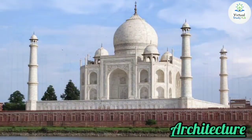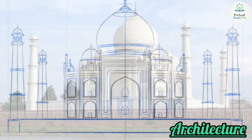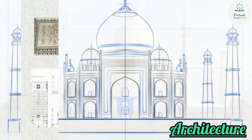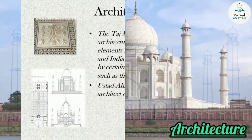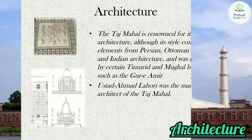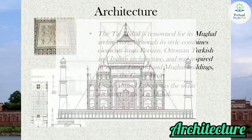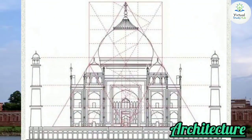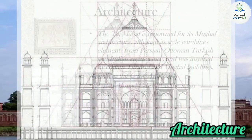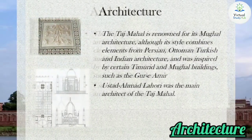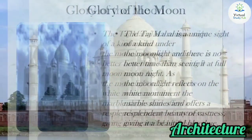This portrait is actually a piece of art done on a ceramic plate. Let us get to know a bit about its architecture. The Taj Mahal is made out of marble and many special materials. It is renowned for its Mughal architecture, although its style combines elements from Persian, Ottoman Turkish, and Indian architecture. It was inspired by certain Timurid and Mughal buildings. Ustad Ahmed Lahuri was the main architect of the Taj Mahal. As mentioned, the artisans reportedly had their hands cut off after completing this spectacular tomb so they could not remake a comparable building.